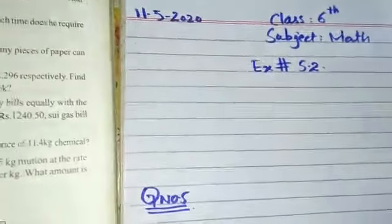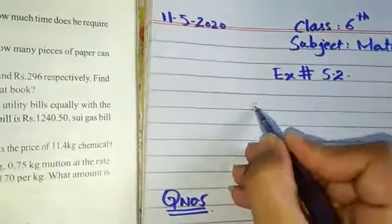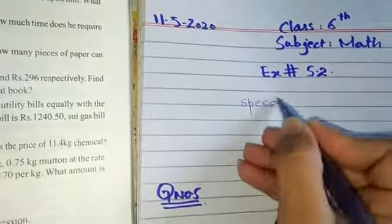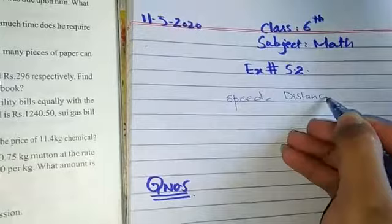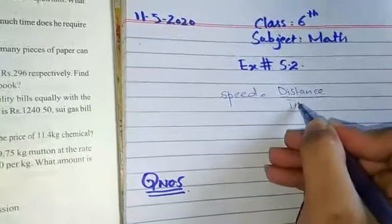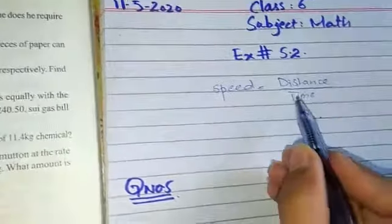Before our question, you have to know the formula of speed. The formula of speed is: speed is equal to distance divided by time, or distance over time. Basically, speed is the distance covered in a unit time.